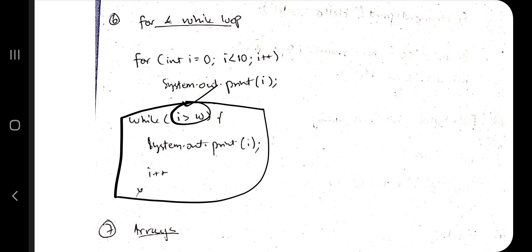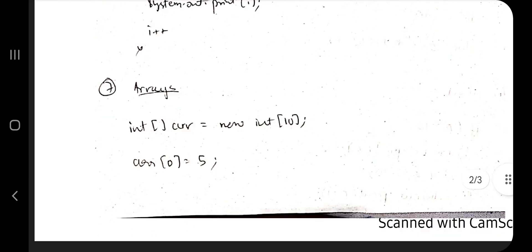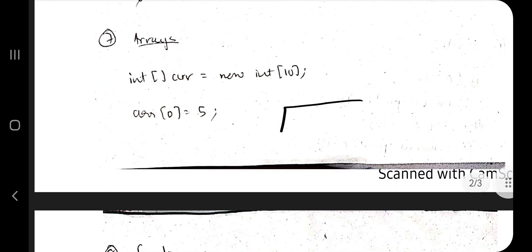Coming to while loop, it's the same thing. While i is greater than 10, the condition is true. If it's true, it will do the following operation and it will increment. After that, till i is greater than 10, it will execute. That was the for and while loop.